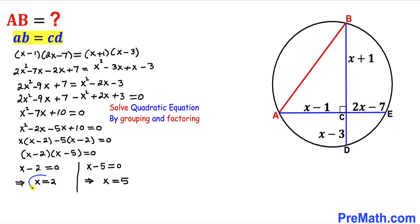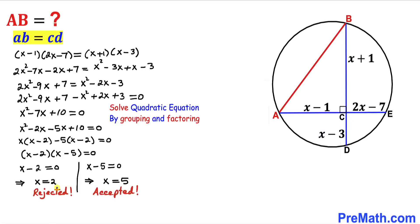Let's focus on x equal to 2. If we plug it in — for example into x minus 3 — that gives us 2 minus 3, which is negative 1. Since this represents a side length, it cannot be negative. So x equal to 2 is not possible and we reject this value, accepting x equal to 5.